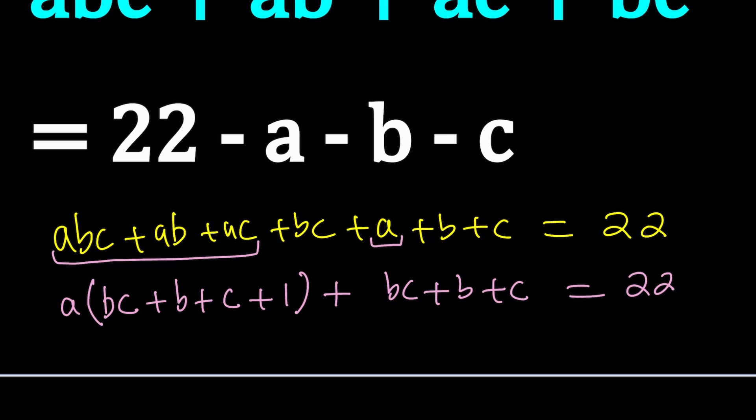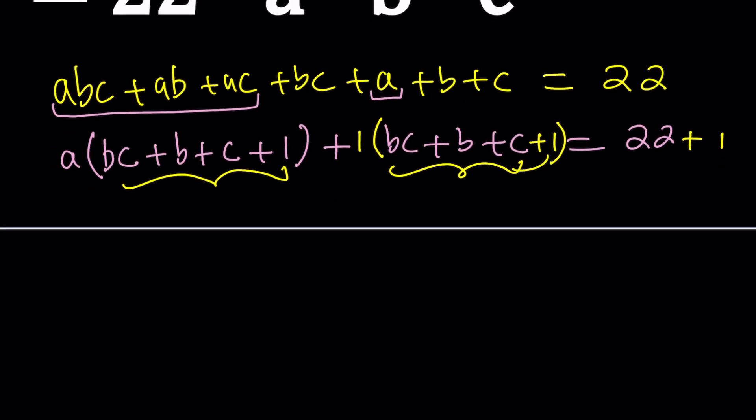Nice. But not completely nice because we need to do something. And that is going to be adding something to both sides. And that is determined by the expression inside the parentheses. Take a look at this and take a look at that. Do they look similar? Absolutely. They differ by one. So we need to add one to both sides. We're also going to be able to factor by taking out one. So now we have a common factor. And now we can take out a plus one, and it will be multiplied by bc plus b plus c plus one. And 22 plus one is 23.